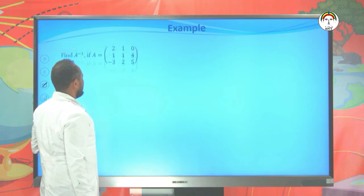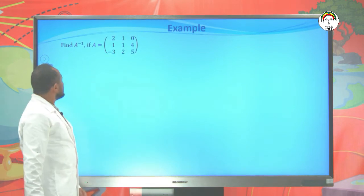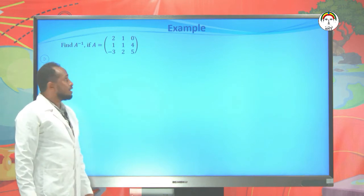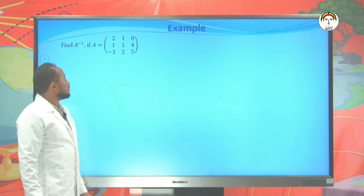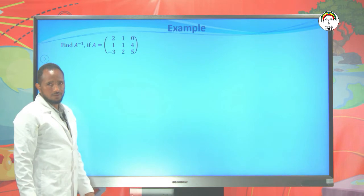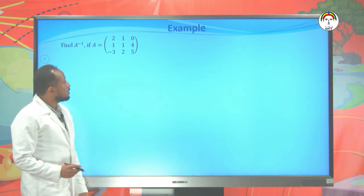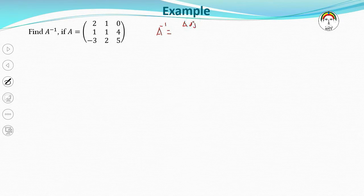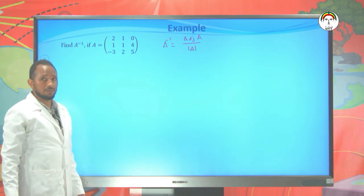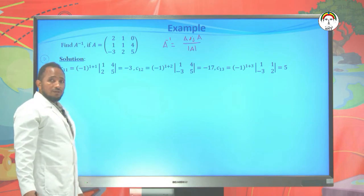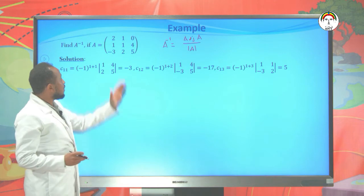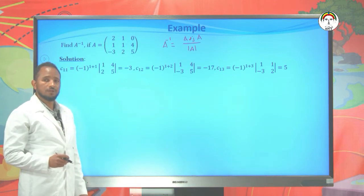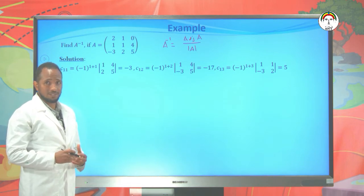Let's find the inverse of matrix A, where A is [2, 1, 0; 1, 1, 4; -3, 2, 5]. Using the formula A inverse equals adj(A) over det(A), we need to find the adjoint of the matrix and its determinant. To find the adjoint, we first need to find the cofactors of each entry to build the cofactor matrix.